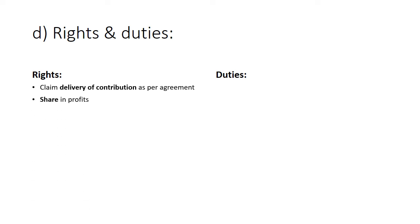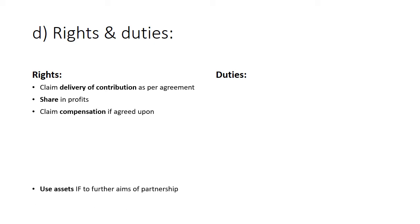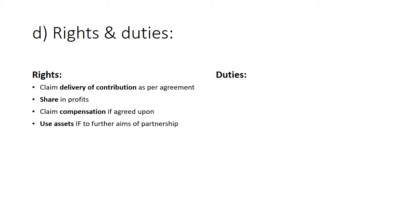All the partners also have the right to share in the profits. If and when compensation has been agreed upon, the partner has the right to claim this compensation as per the agreement. A partner may use the partnership assets because partners are co-owners in the partnership assets, but these assets must be used to further the aims of the partnership. A partner may also use partnership property for his own purposes, but only if the consent of the other co-partners has been obtained, or if the partner's limited use of the property will not conflict with the interest of the partnership.